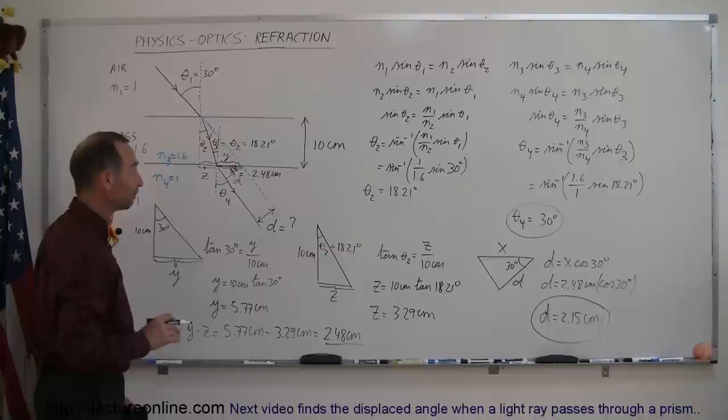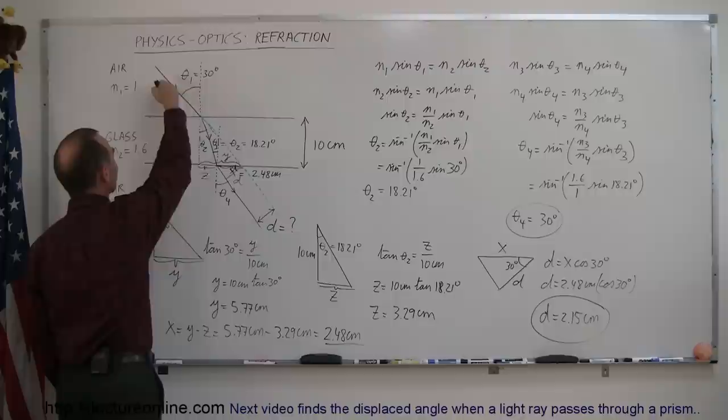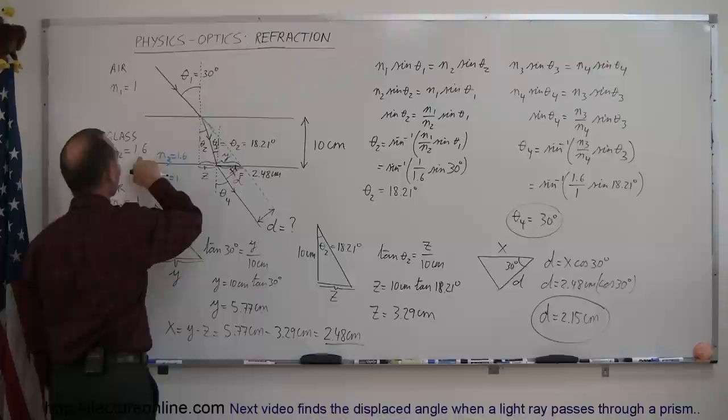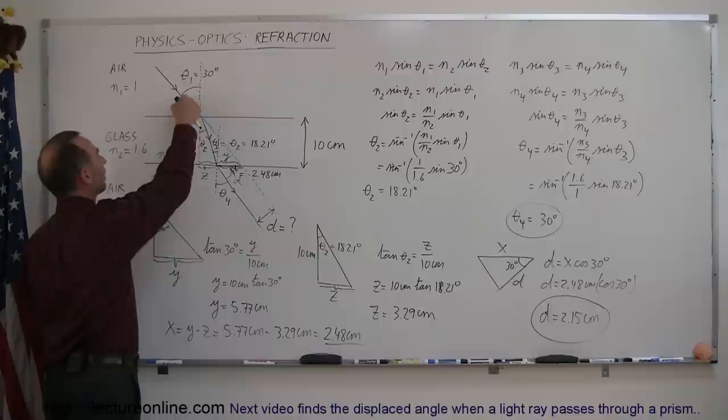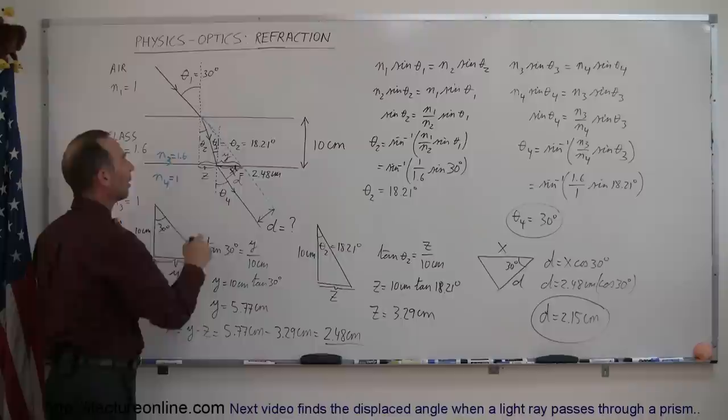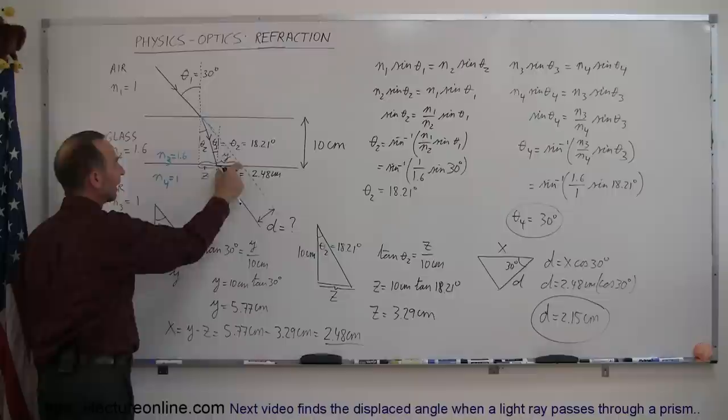That was not an easy problem. To recap: a light beam travels through a 10-centimeter thick slab. At the first boundary it refracts toward the normal entering higher-index glass; at the second boundary it bends away from the normal returning to air. The exiting ray is parallel to the entering ray but offset by distance d. To find d, you solve three successive triangles — the large one, the smaller refracted one, and the final offset triangle — giving d equals 2.15 centimeters.